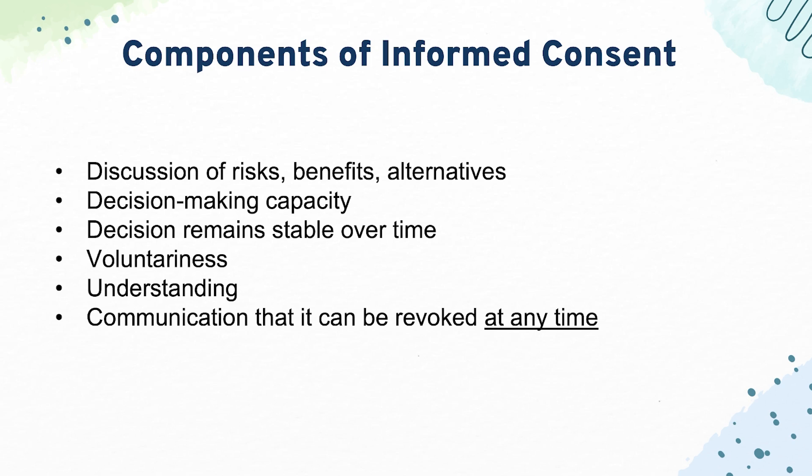A lot of times questions might talk about a scenario where a patient is being given a speech about potential treatment options by a provider, but the provider may not mention the alternatives to the procedure or the risks. The question might ask what did this physician fail to do? In that case, the physician didn't give full informed consent, because to have full informed consent you have to have all three components: risks, benefits, and alternatives.